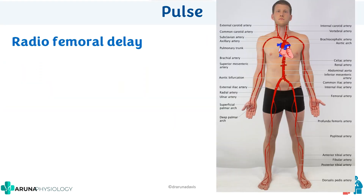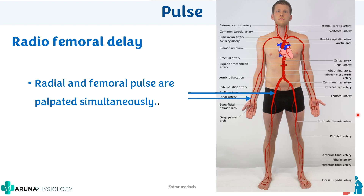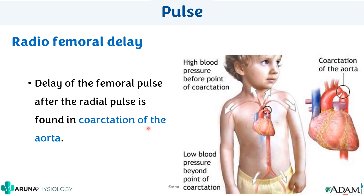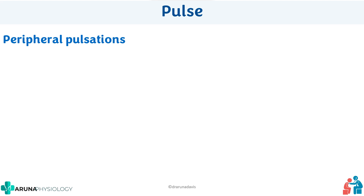Next, check for radio-femoral delay by simultaneously palpating the radial and femoral pulses. If they are not coming simultaneously, it could indicate coarctation of the aorta — a constriction of the aorta where blood flows to the radial artery normally but is delayed to the femoral artery. You have to simultaneously palpate both arteries to detect any delay.